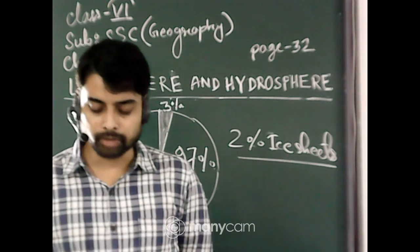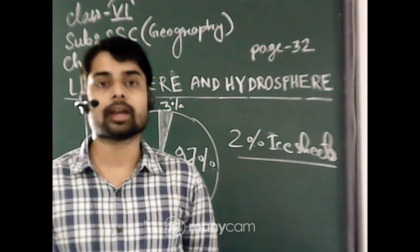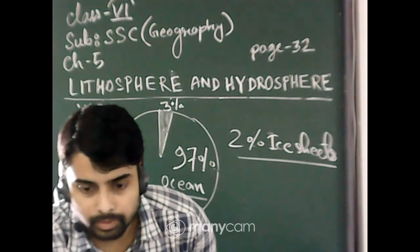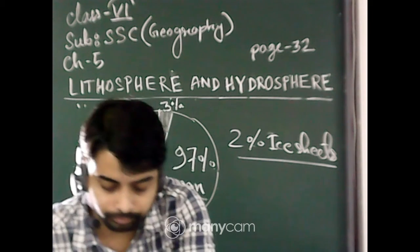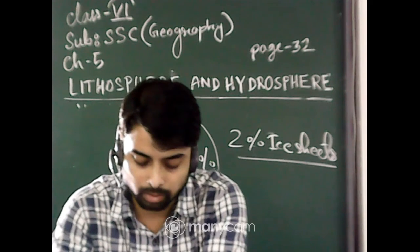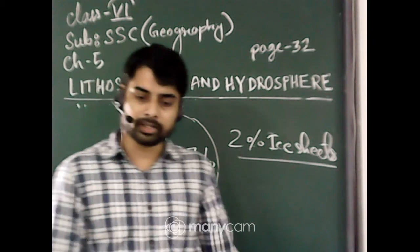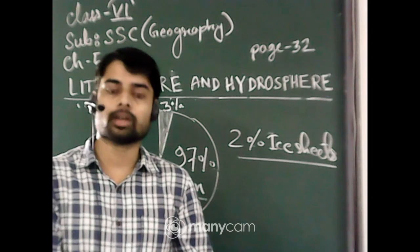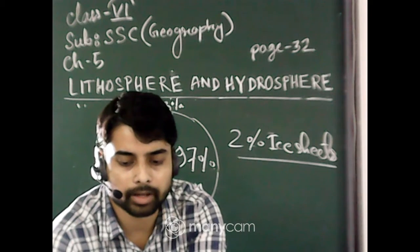Thank you everyone for joining this class. See you in the next class, where we will cover oceans and atmosphere. The lithosphere is the solid portion of the Earth on which we live, and it is divided into seven continents. Today I discussed four continents, and in the previous class I discussed the other three — Asia, Africa, and Europe — along with the lithosphere in detail. Please check that video as well.